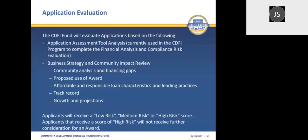Most importantly, we are looking at your growth and projections on how the award would be used, including the number of small dollar loans to be made over the three-year period of performance. After we go through this process, each application will receive a low risk, medium risk, or high risk score. Applications that receive a high risk score at this phase will not receive further consideration for an award.